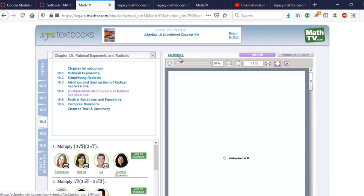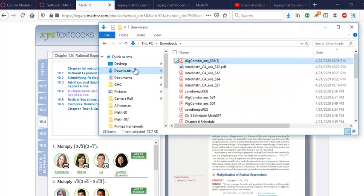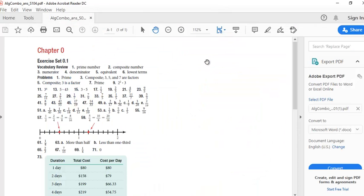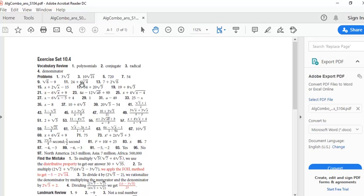The answers are here for 10.4. I click on that. And my computer has downloaded the answers to 10.4. There they are. Odd numbered answers. Right?